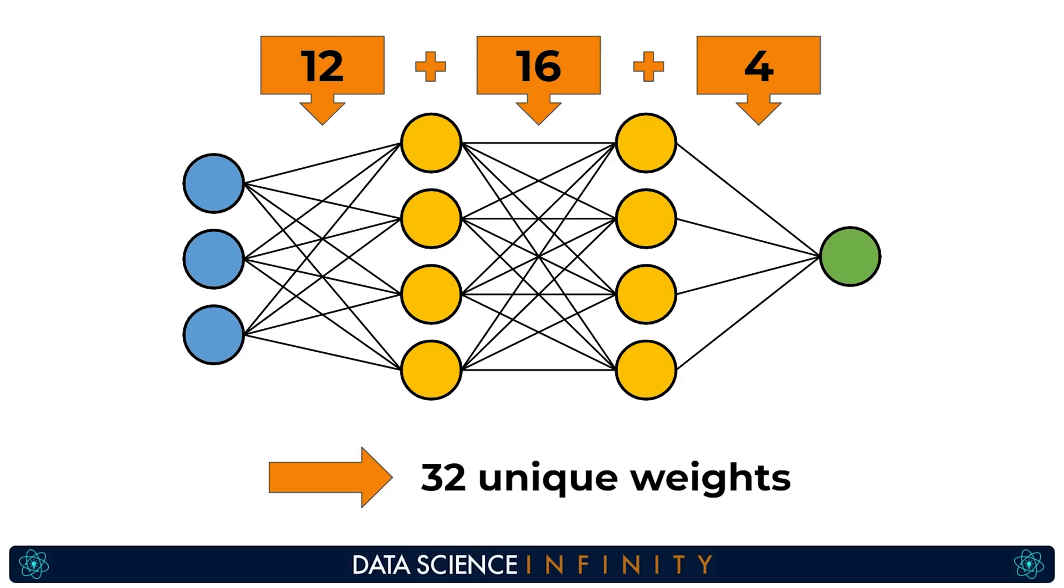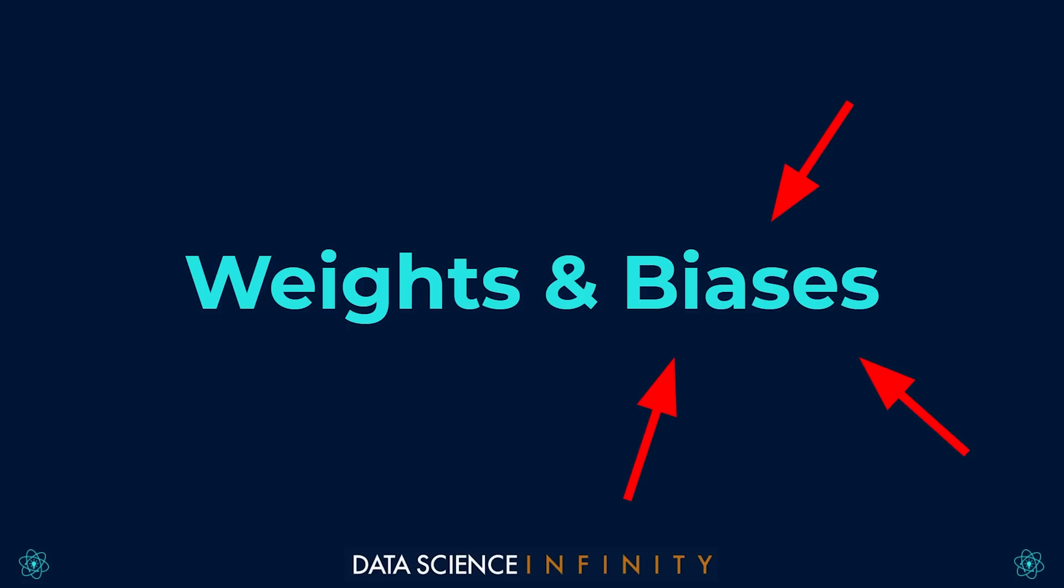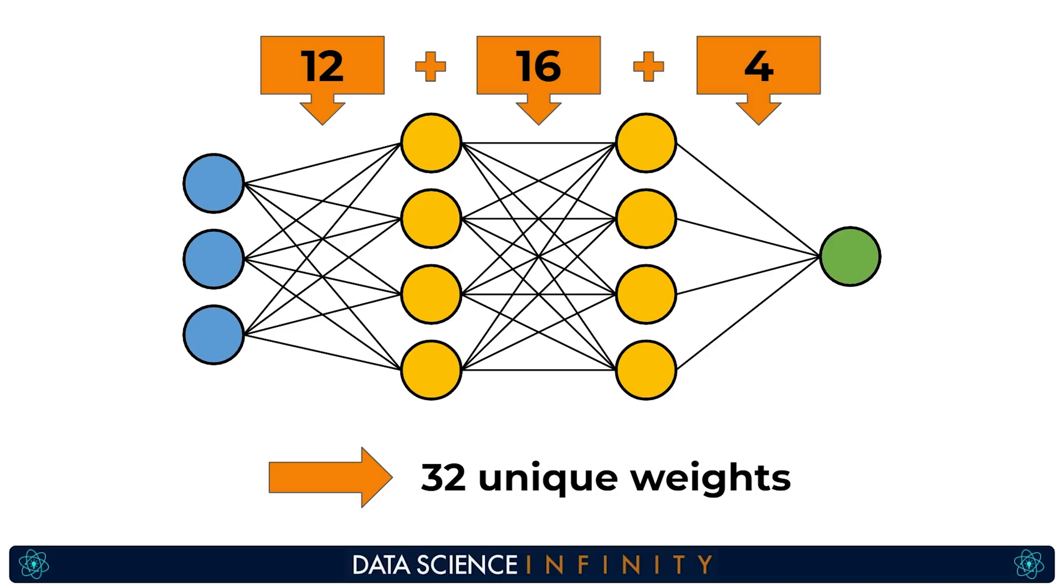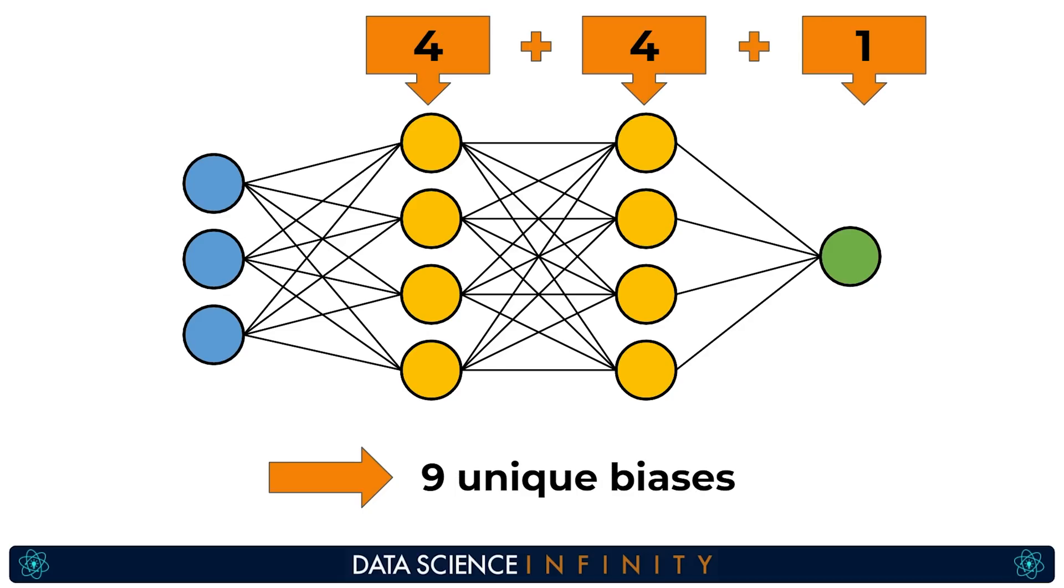Cool so you now know a bit about what weights are and where they exist in our network. Let's keep moving and quickly talk about the other thing that was in the title of this tutorial. Biases and we'll come on to the more intricate details of those soon but for now just know that every neuron in our network that is receiving information from another neuron in other words all neurons apart from those in the input layer have a unique bias value associated with them. So while our example network has 32 unique weight values it would also have nine unique bias values.